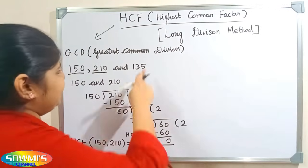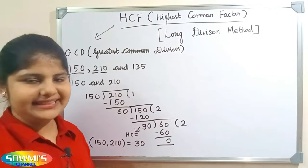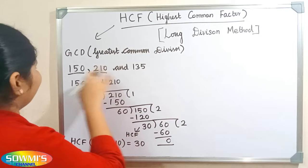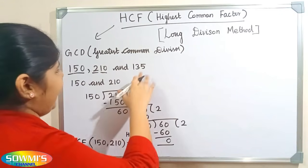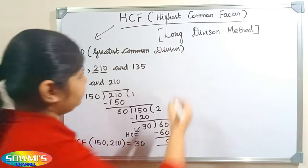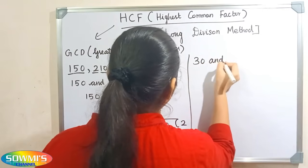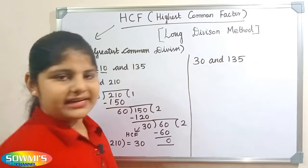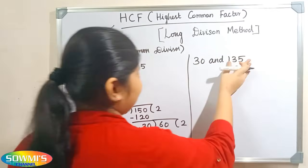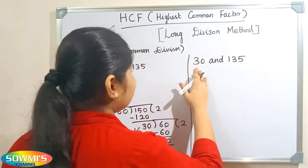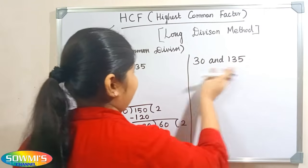Next we will take the third number and the HCF of these two numbers. The third number is 135 and the HCF of 150 and 210 is 30, so now we have to take 30 and 135. Now we have to find the HCF of 30 and 135. Here the greatest number is 135 and the smallest number is 30, so we have to divide 135 by 30.